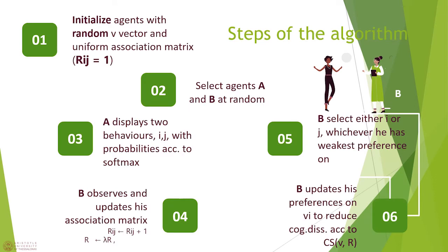The model works as follows. Initialize the population with random preferences and uniform associations. Select two agents, A and B, randomly. A then displays two behaviors, I and J, and B observes this. As a result, B doesn't necessarily change his preference, but he does immediately update his associations between I and J. Then B selects the weakest of I and J behaviors and changes his opinion on this behavior if this decreases cognitive dissonance.